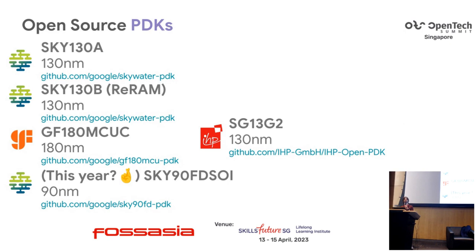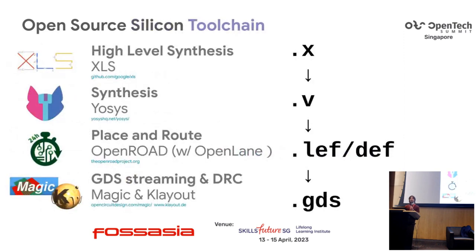This year something very good for the ecosystem happened: a foundry in Austria called IHP released an open source PDK for their 130nm technology without consulting our team at all. Before, Google had been lobbying foundries to open source their PDKs — this was the first organic release from a foundry that acted independently. Later this year we also hope to release a 90nm PDK for the SKY90 FD process.